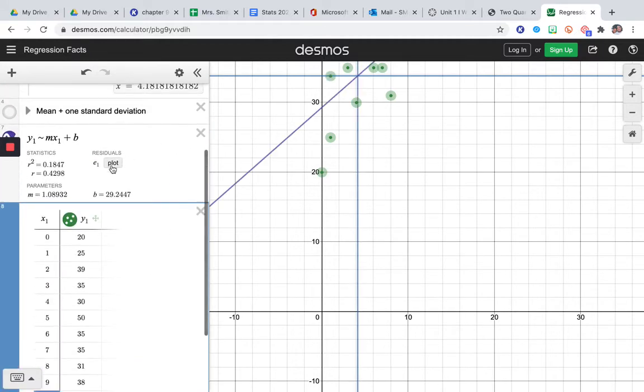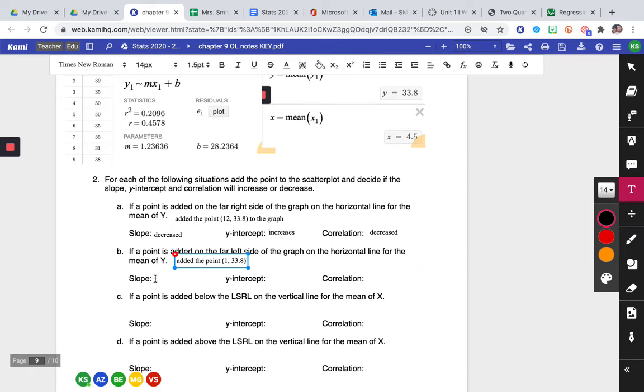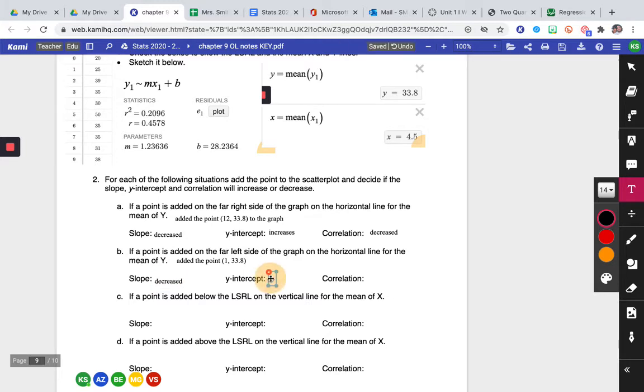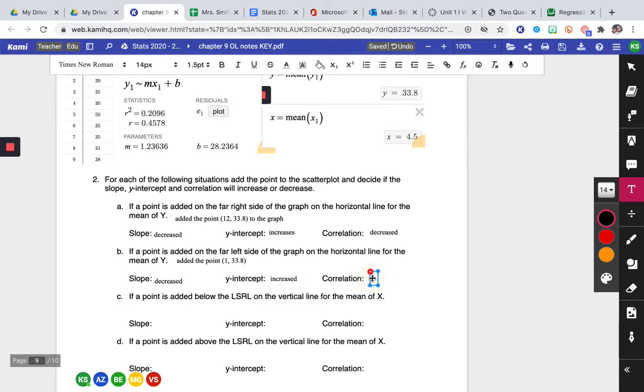So come up here to this box. Our r value is 0.42, which is smaller than our original r value which was 0.45. Our slope is 1.08, so our slope decreased again. And our y-intercept is 29.2, and that actually increased. So let's go and capture that. So the slope decreased, the y-intercept increased, and the correlation coefficient decreased.